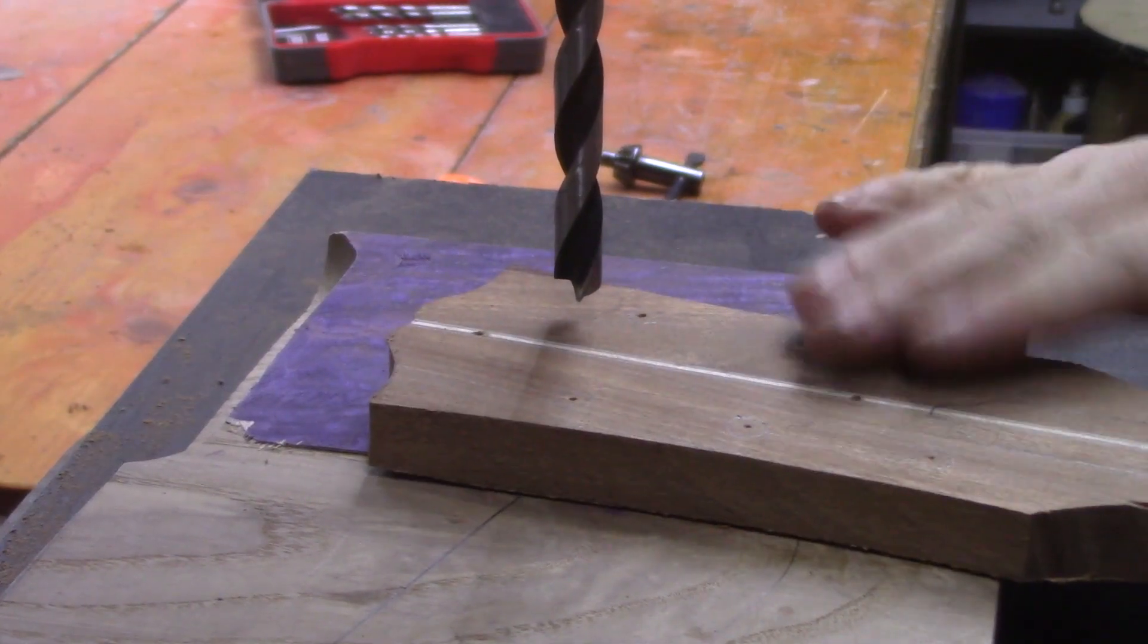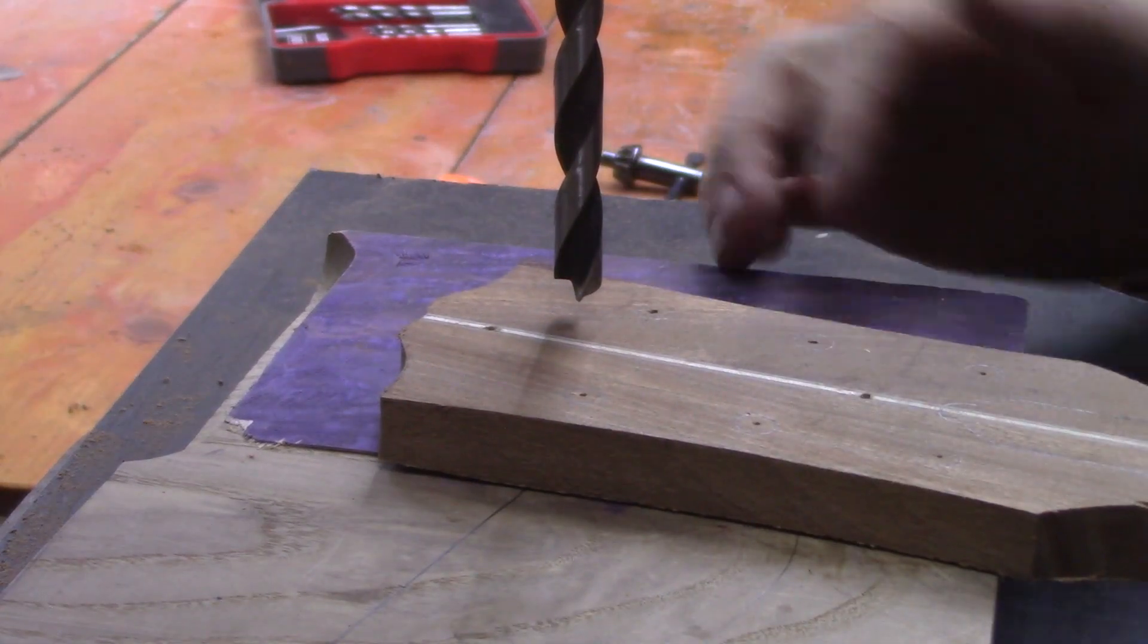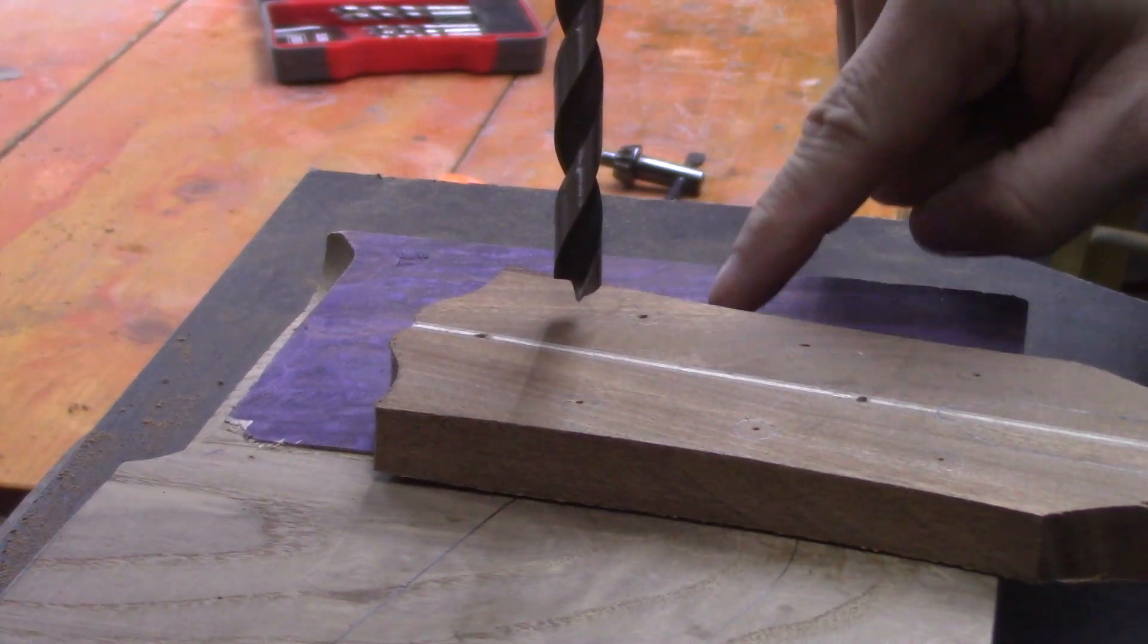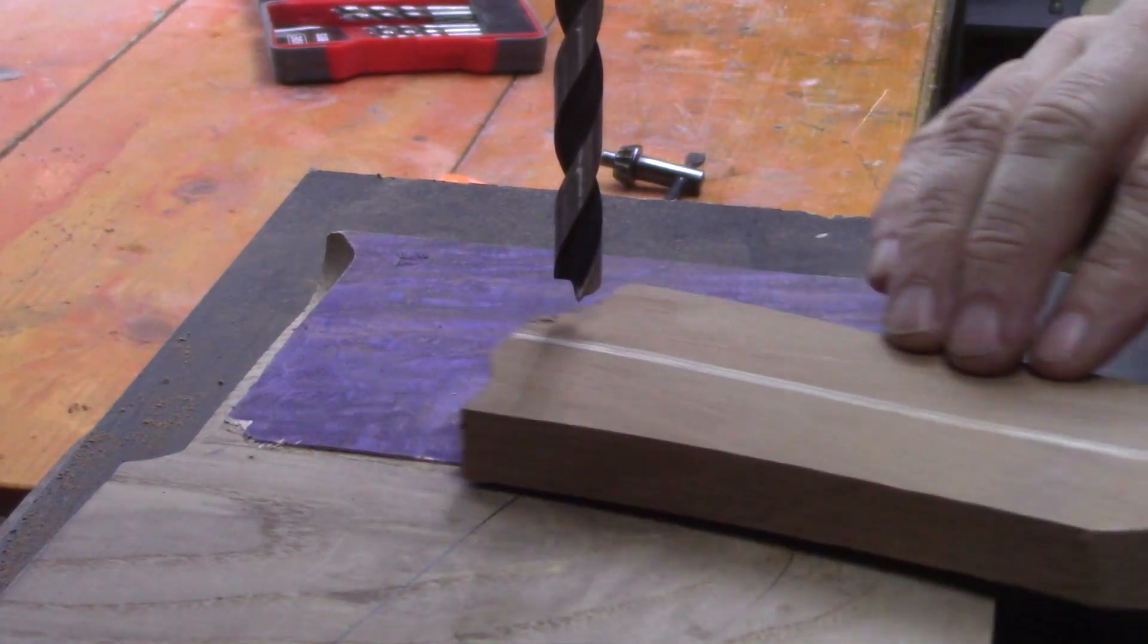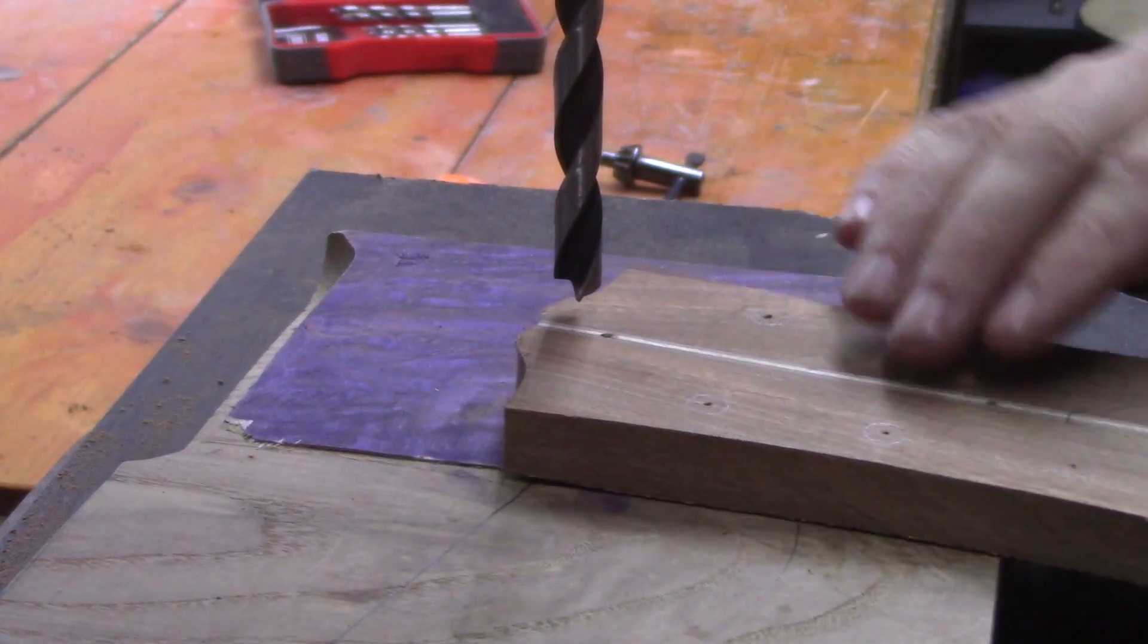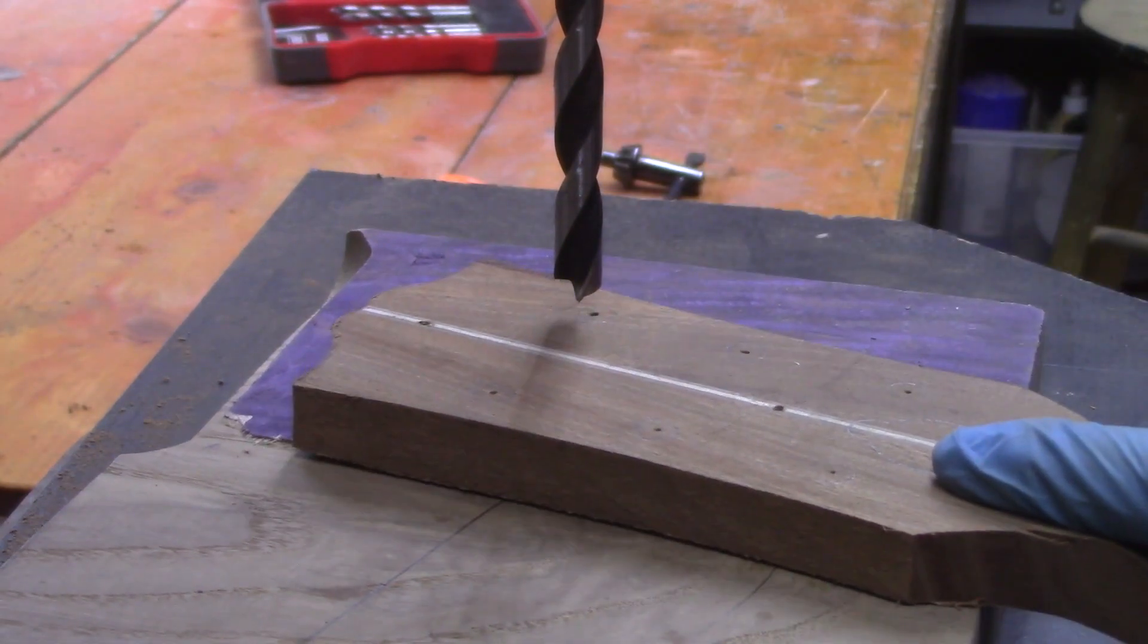We're just going to drill our holes for our tuners now. We've got a backing board behind us here to ensure we don't blow out through the back, and we've set our depth stop on our drill so it should just start to poke through the back. Then when it does, we can flip it over and drill from this side to ensure we have a nice clean hole with no tear out on either side.